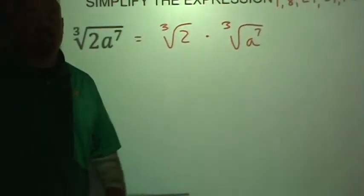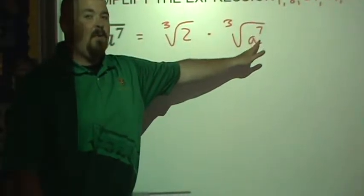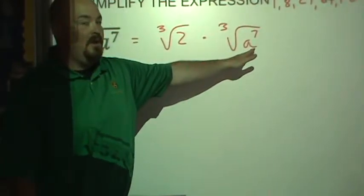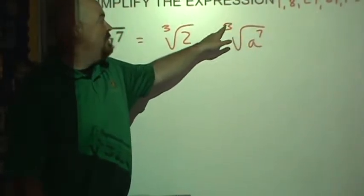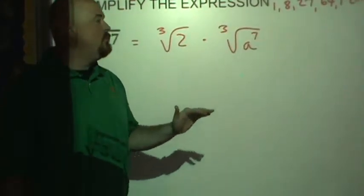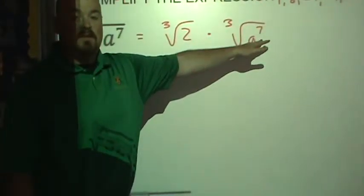Two doesn't fit that criteria. But any time you have a power of a variable where the exponent is higher than the degree of the radical, you're going to be able to move out some of these.